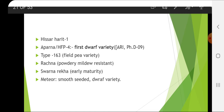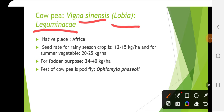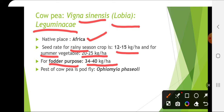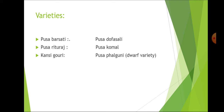Cowpea is another important crop from the Leguminaceae family — Vigna unguiculata, known as Lobia. Native place is Africa. Seed rate for rainy season crop is 12 to 15 kg per hectare, for summer 20 to 25 kg per hectare, and for fodder purpose 34 to 40 kg per hectare. Pest of cowpea is pod fly, Ophiomyia phaseoli. Varieties include Pusa Barsati, Pusa Dofasli, Pusa Rituraj, Pusa Komal, Kansi Gauri, Pusa Falguni (dwarf variety) and Pusa Sukomal.